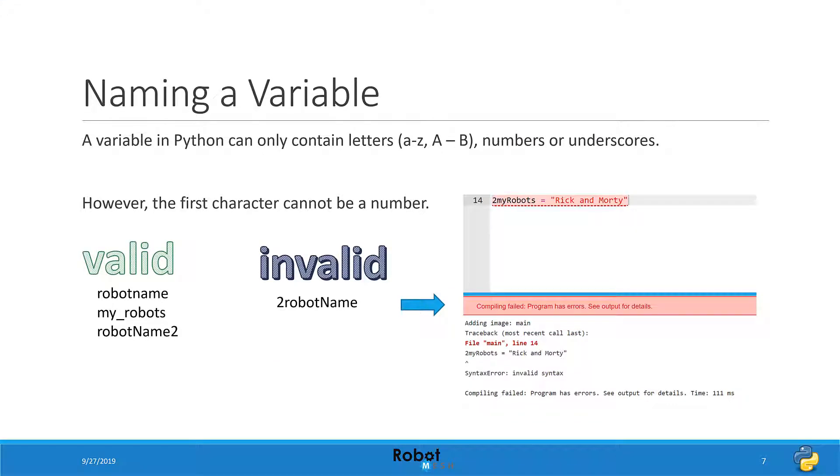Another important consideration is in the rules around naming a variable. A variable in Python can only contain letters, whether it be lowercase or uppercase, numbers, and underscores. The first character in a variable name also can't be a number.